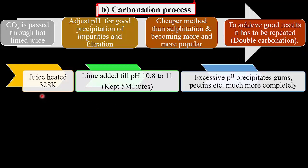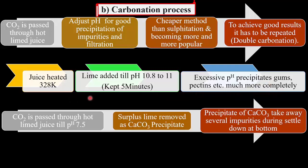In the carbonation process, the juice is first heated to about 328 Kelvin, and then lime is added until the pH becomes 10.8 to 11. This condition is kept for 5 minutes. Due to this very high pH, gums, pectins, etc. are precipitated much more completely. After that, CO₂ is passed through this hot limed juice until the pH becomes 7.5. When carbon dioxide gas is passed through the hot limed juice, the surplus lime is removed as a precipitate of calcium carbonate. This precipitate of calcium carbonate, during settlement, takes several impurities along with it. For the double carbonation process, this whole procedure is repeated again.